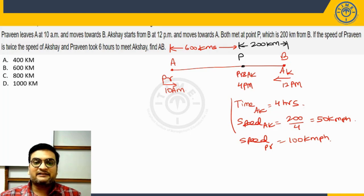Now what is he asking us? He is asking us find AB. So we can clearly see from the diagram, my answer will be 600 plus 200 which is 800 kilometers.